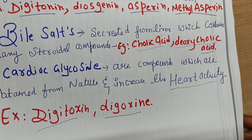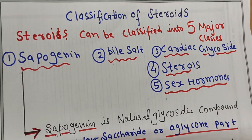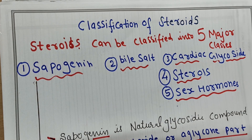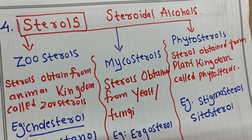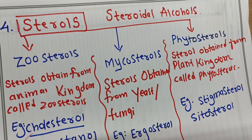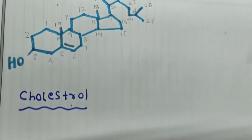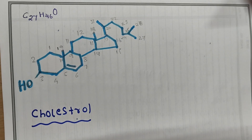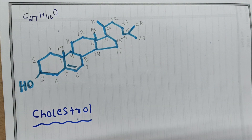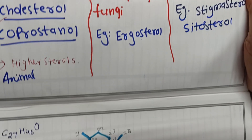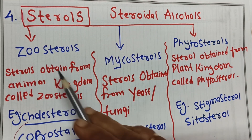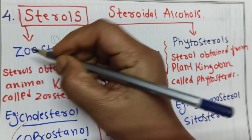The fourth category is sterols, also called steroidal alcohols, which differ from steroids by the presence of an -OH group. Cholesterol is a key example. Sterols are classified into three categories: zoosterols (from animals), phytosterols (from plants), and mycosterols (from fungi and yeast).